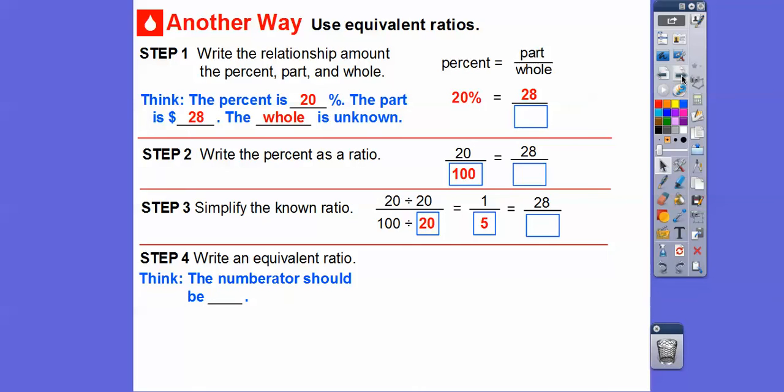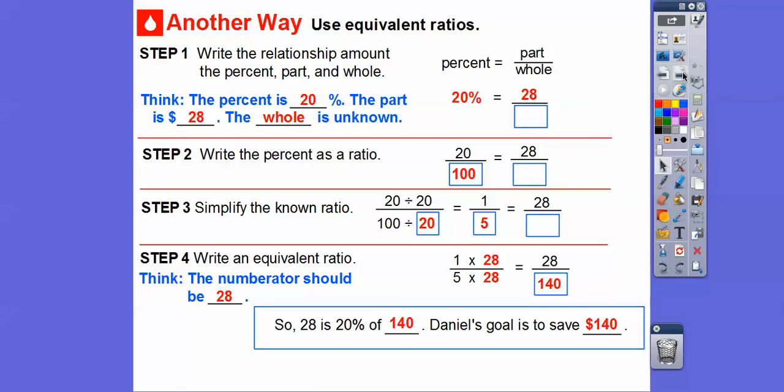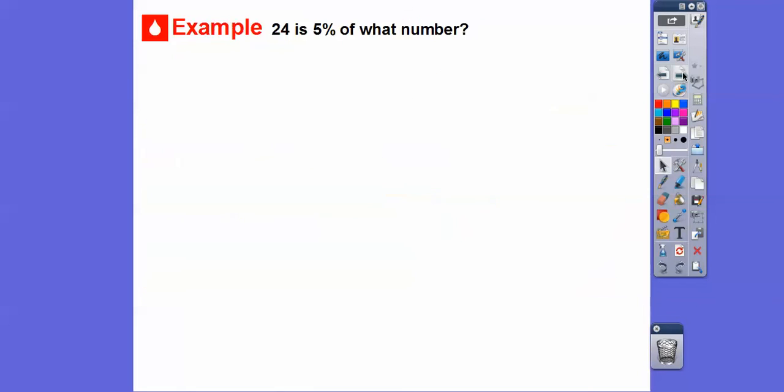So then we can write an equivalent ratio. We want this numerator to be 28, not 1. So we're going to multiply the 1 times 28, which means we've got to multiply the 5 times 28. And 5 times 28 is 140. So 28 is 20% of 140, and Daniel's goal is to save $140.